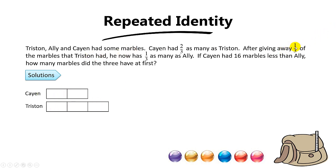After that, Triston is going to give away one-third of his marbles. Since Triston has three units, to give away one-third means you shed one unit away — that one unit is gone. Now he had one-third as many as Ellie. So the question is: if Triston has two units left, how many units will Ellie have?